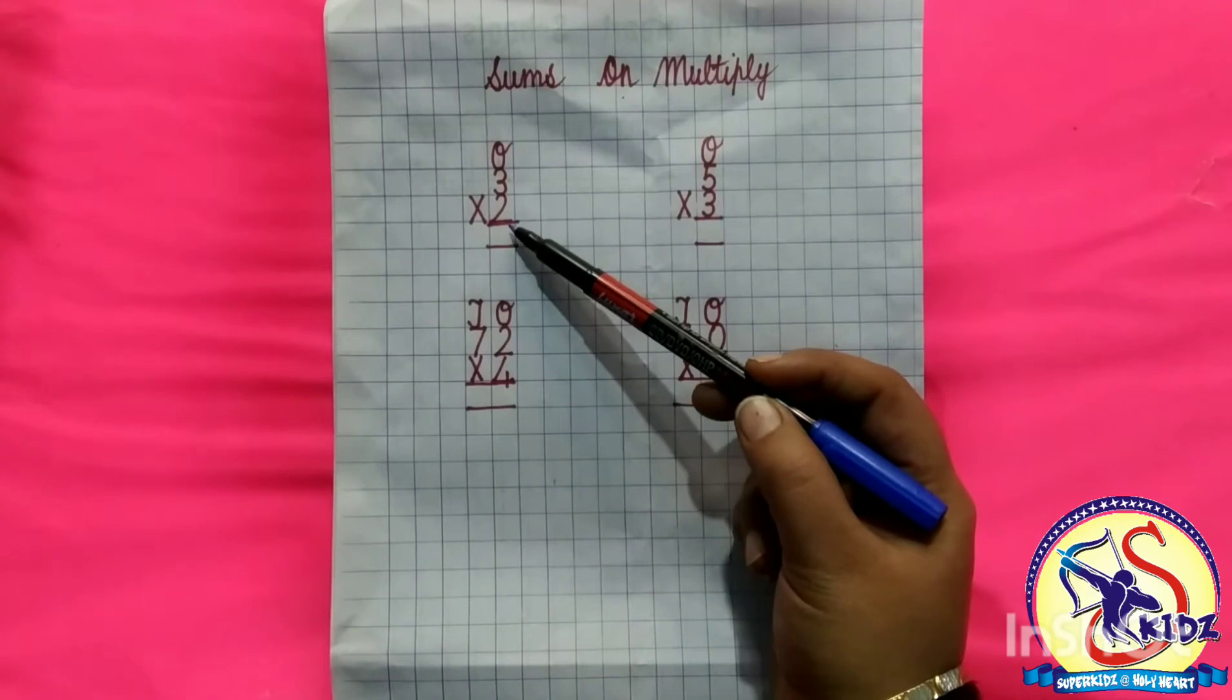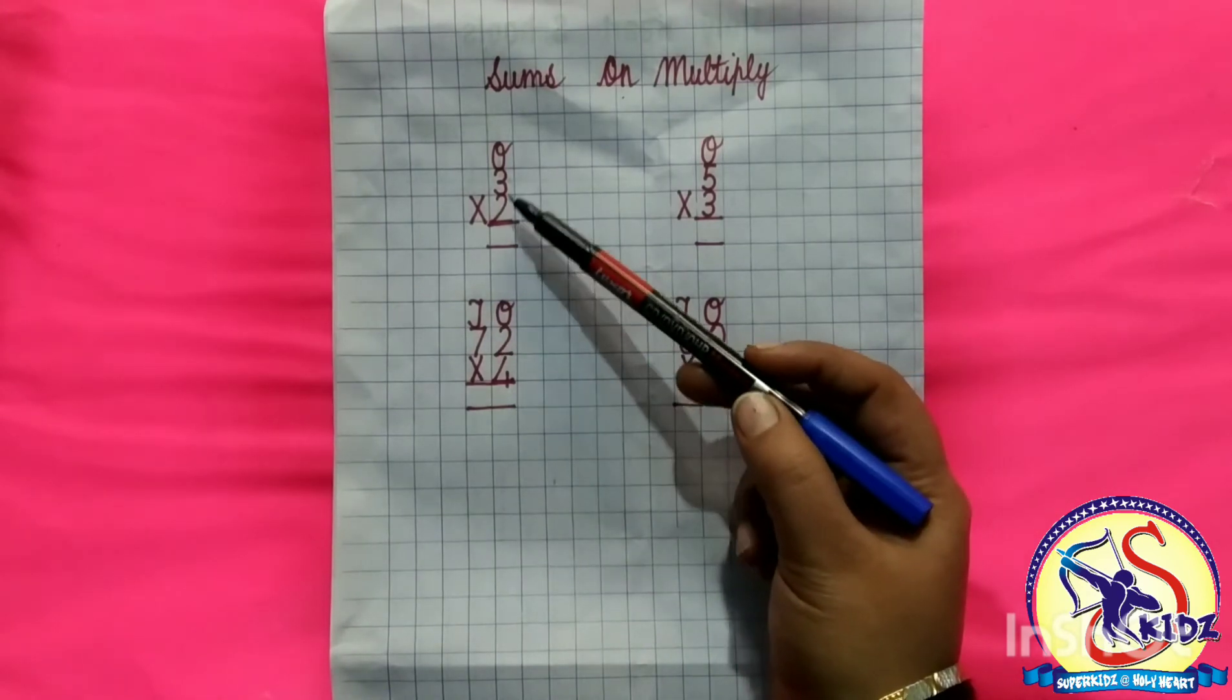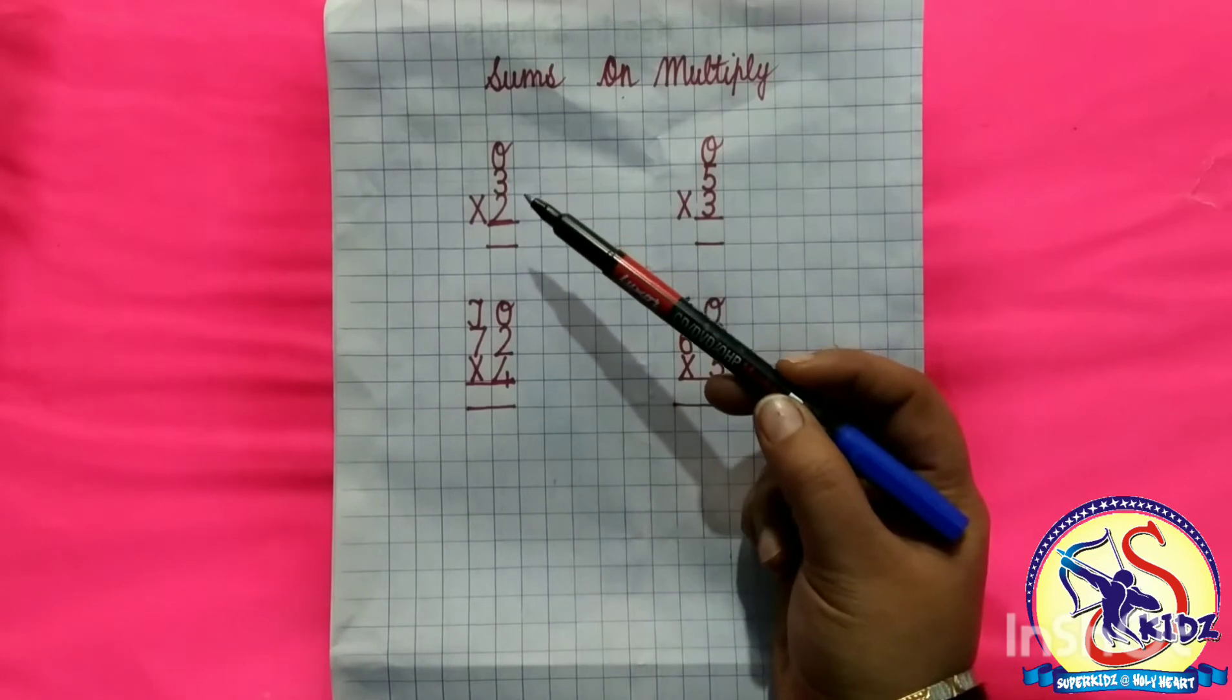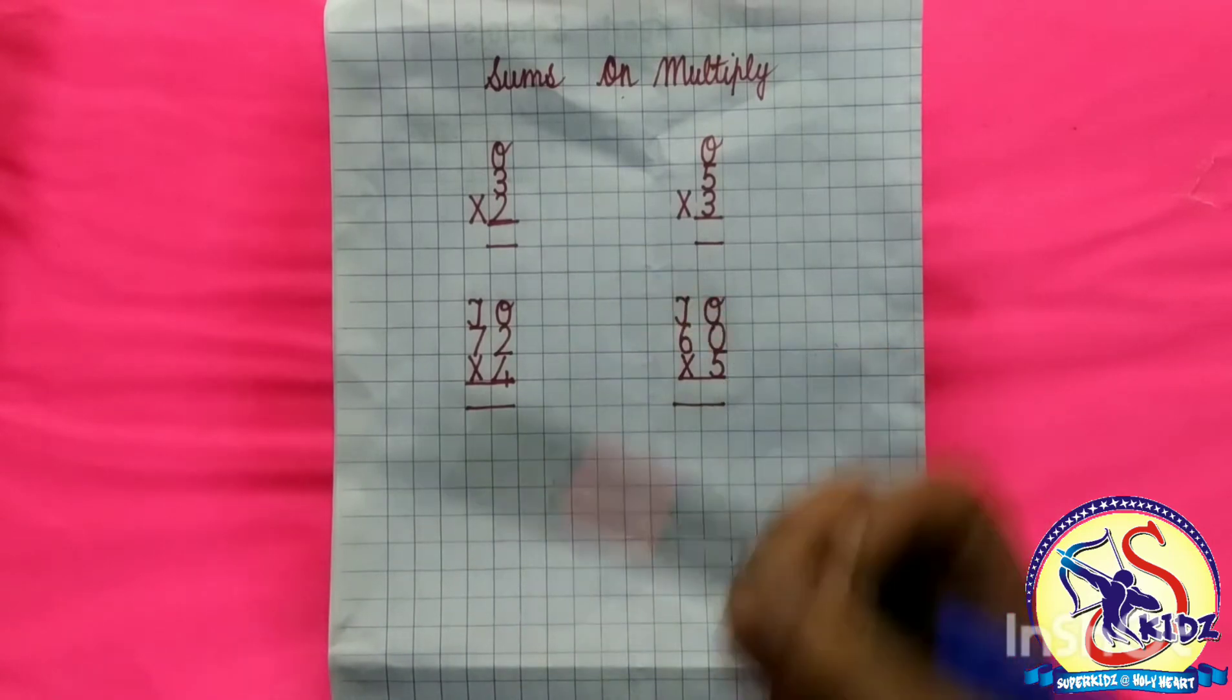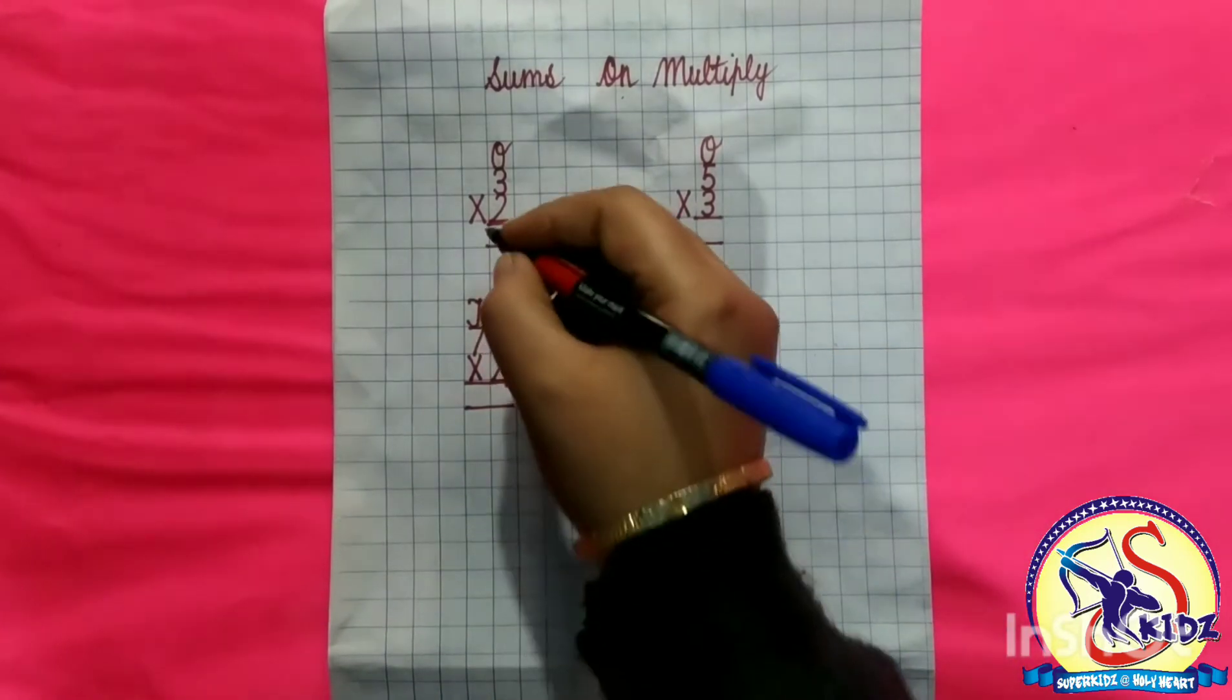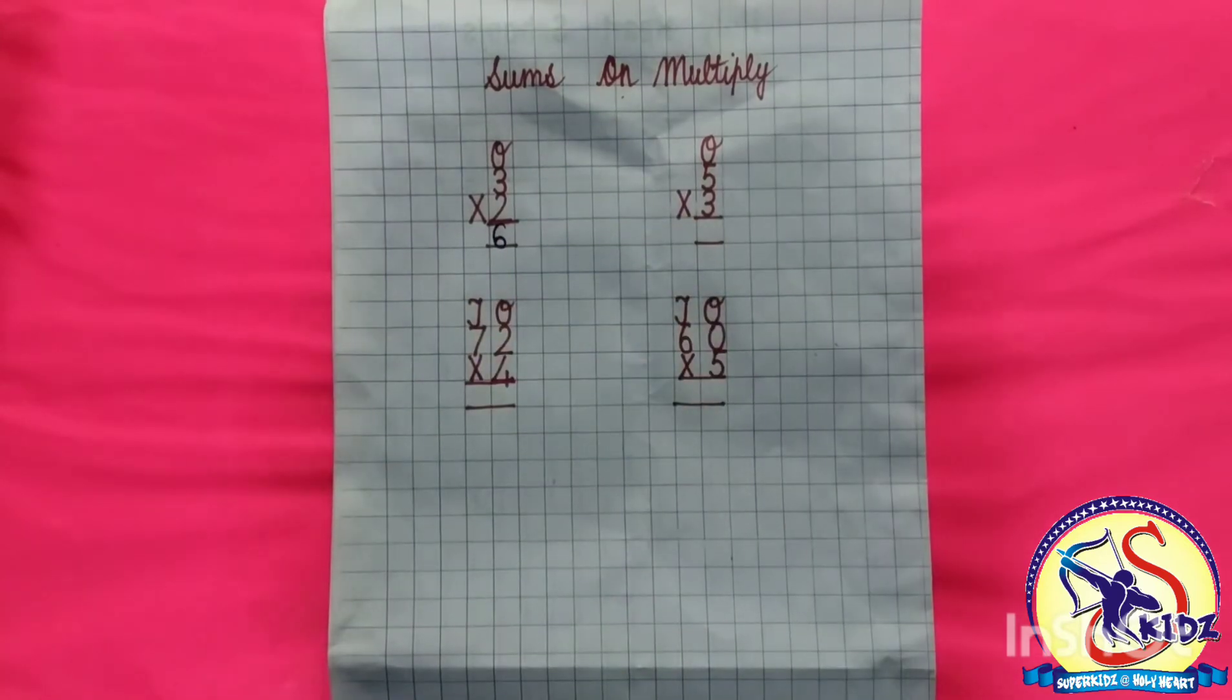Which number is written here? Number 2. So we will speak table of 2 till 3. 2 into 1 equals to 2, 2 into 2 equals to 4, and 2 into 3 equals to 6. So answer is 6. Now come to next sum.